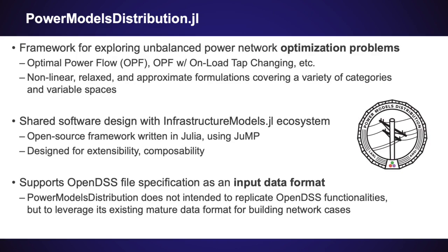So we created PowerModels Distribution, our optimization-focused open source library for electric distribution network research. This package is focused on exploring different optimization formulations and problems, because there already exist some very good mature open source packages for unbalanced power flow, which is not an optimization problem with an objective function. We have built-in standard problems and a variety of common formulations, a shared software design with other packages in LANL's infrastructure models ecosystem, and we support a subset of the OpenDSS format to be compatible with many distribution research datasets that already exist.